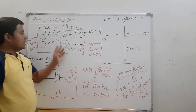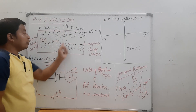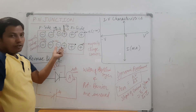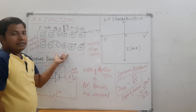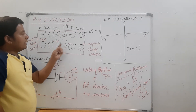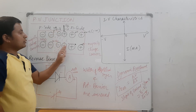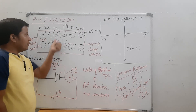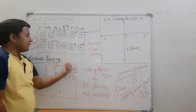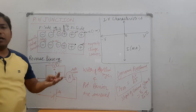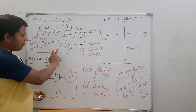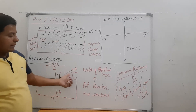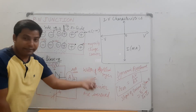When the width of the depletion layer increases, the number of negative ions and positive immobile ions in the depletion layer increases. The number of these ions determines the potential barrier, so the potential barrier for reverse biasing will also increase. In reverse biasing, both the width of the depletion layer and the potential barrier are increased.